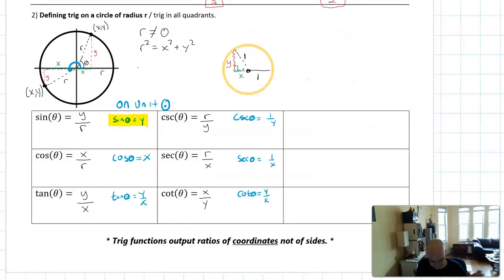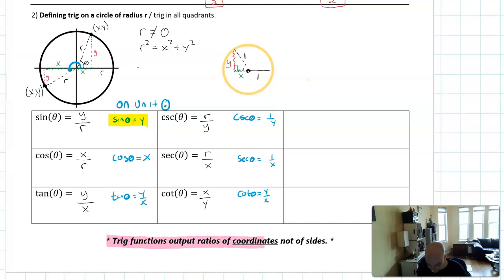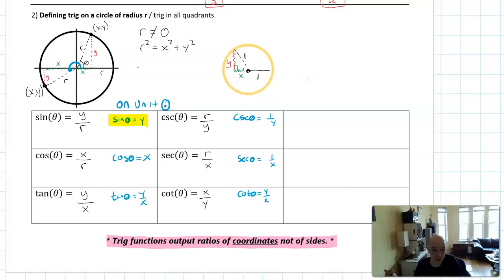Now that we're in math 4 and working in different quadrants, trig functions output ratios of coordinates and not just sides of a triangle. The inputs are still angles, but the outputs are ratios of coordinates, which means we can apply trig to situations where triangles don't make sense — we're expanding our view of what trigonometry is. One interesting consequence is that trig functions can now be negative.